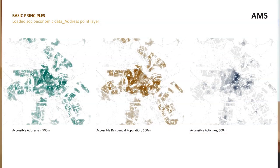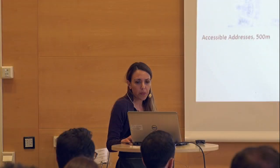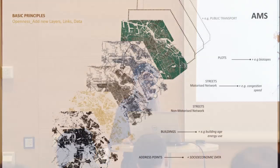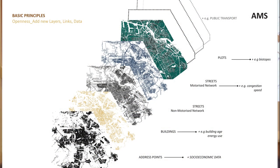Here is an example of how these different variables are integrated into the address point layer — for example, residential population or activities. You can have the same layer with different representations, and you can understand the spatial patterns and the distribution of these other variables. When you start linking external datasets and other kinds of data, of course you can understand the possibilities of that, because then you can add different kinds of data — it's never-ending in a way.